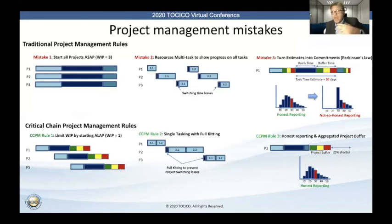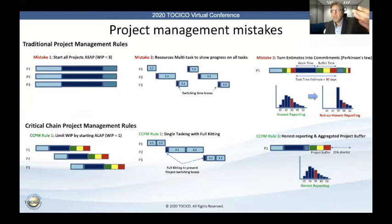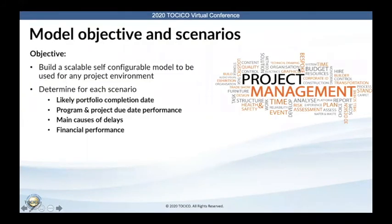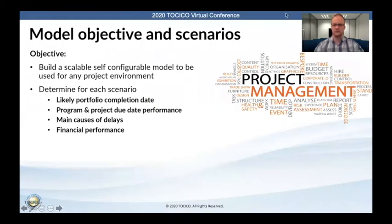Those are the three mistakes we wanted to model. If this company made these three mistakes, how long is it actually going to take? What will be the real net profit? And how much better could they do if they simply implemented these simple rules to try and reduce or even avoid these mistakes? So let's step through the demo — I'll hand over to Jacobin Vosluer now to do the demonstration of the model.